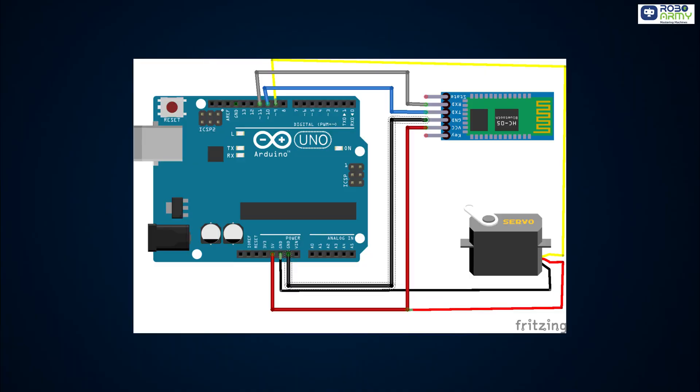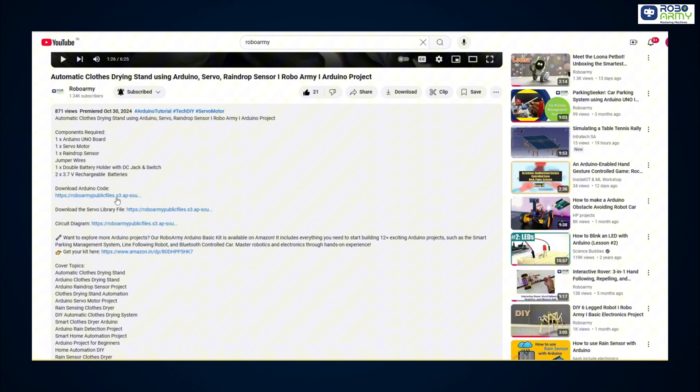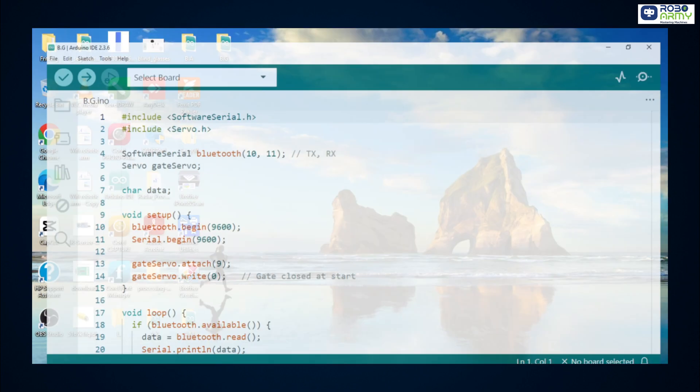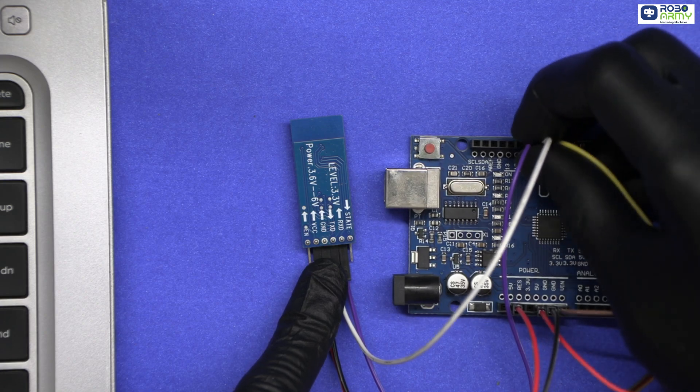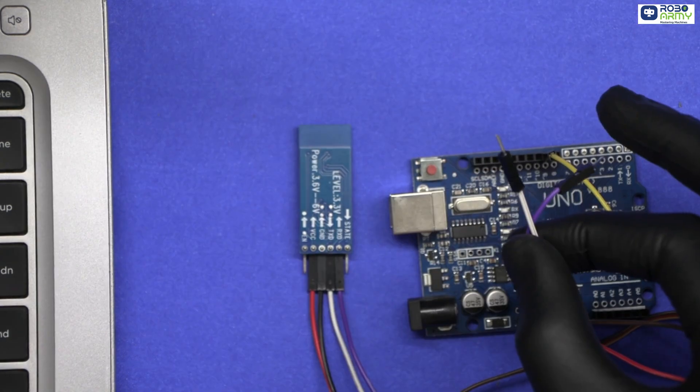Make sure to double-check your connections with the circuit diagram. Download the code file given in the description below. Open the code file in the Arduino IDE. Before uploading the code, make sure to remove TX and RX pins from the Arduino.